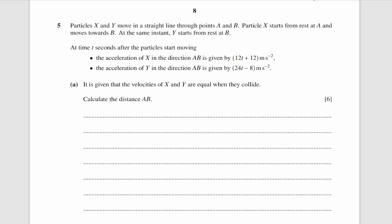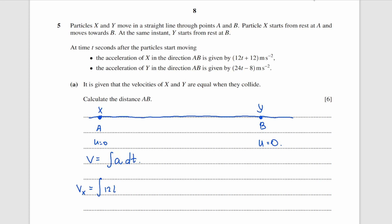Question 5. We have a straight line with two points A and B and two particles x and y. Both start from rest. Since we're given accelerations, we can find their velocities by integrating. Integrating 12t plus 12 gives 12t squared over 2 plus 12t. Since initial velocity is zero, c equals zero, so velocity of x is 6t squared plus 12t.